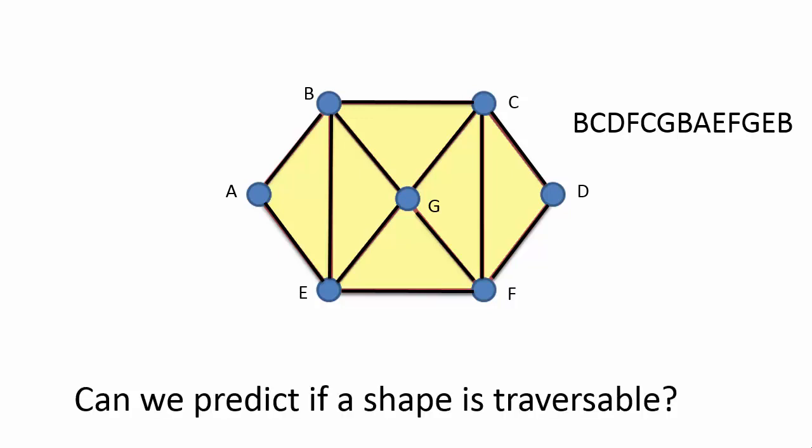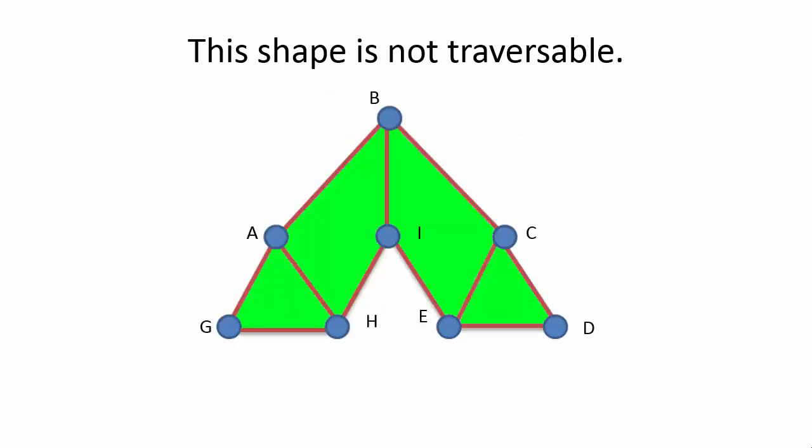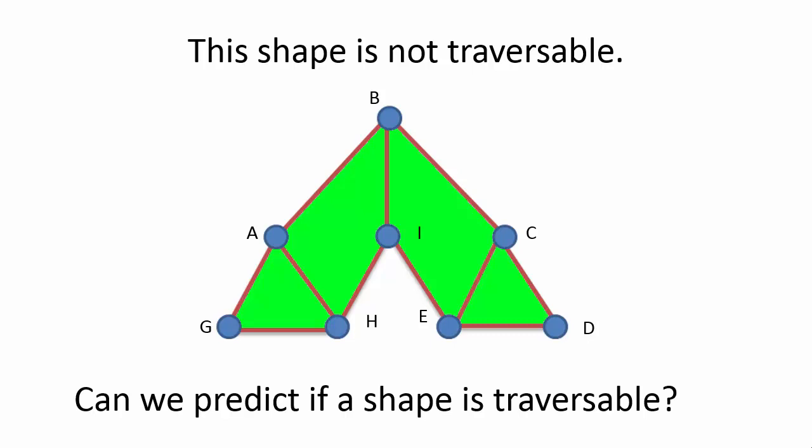Again, we pose the question: how do we know in advance if the shape will be traversable? This shape is not traversable, so I won't even pretend to show it, but how do I know that? Similarly, this shape is not traversable. Again, how can we predict that?